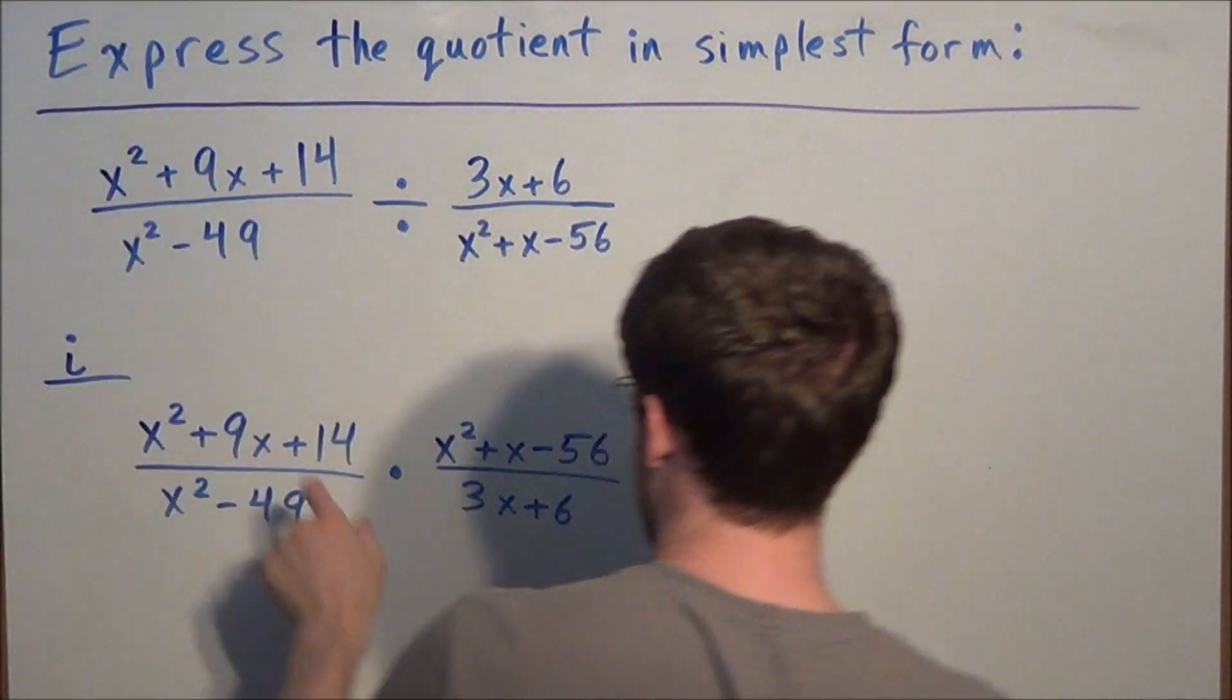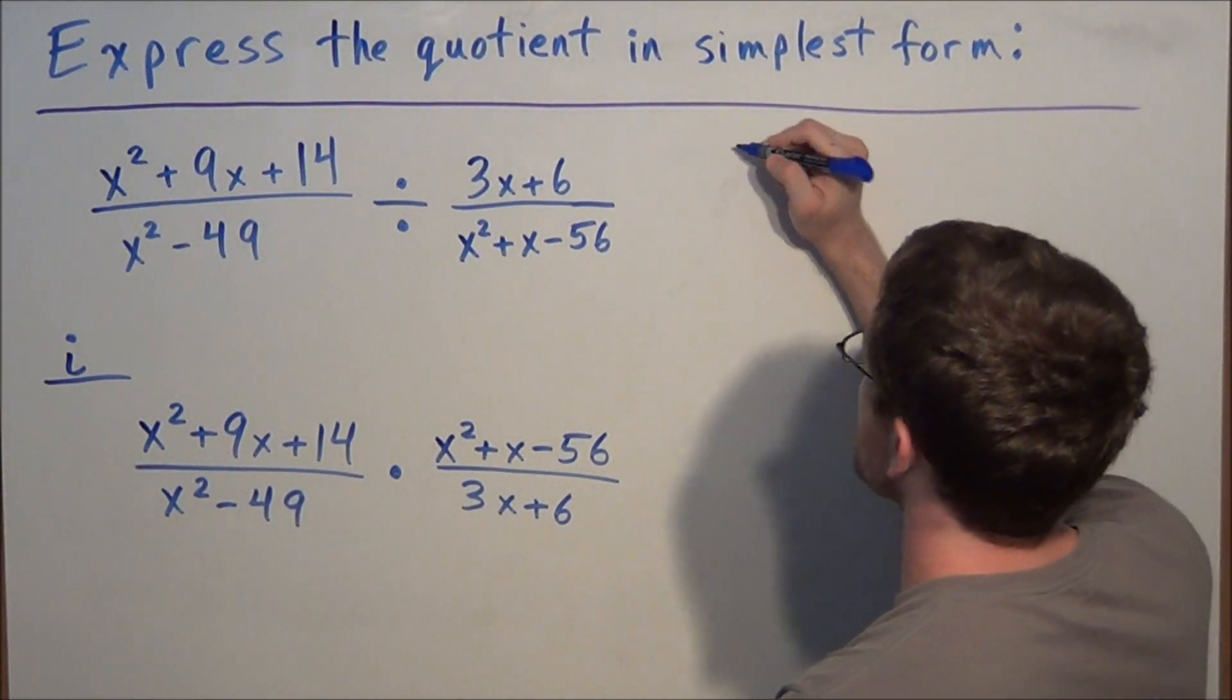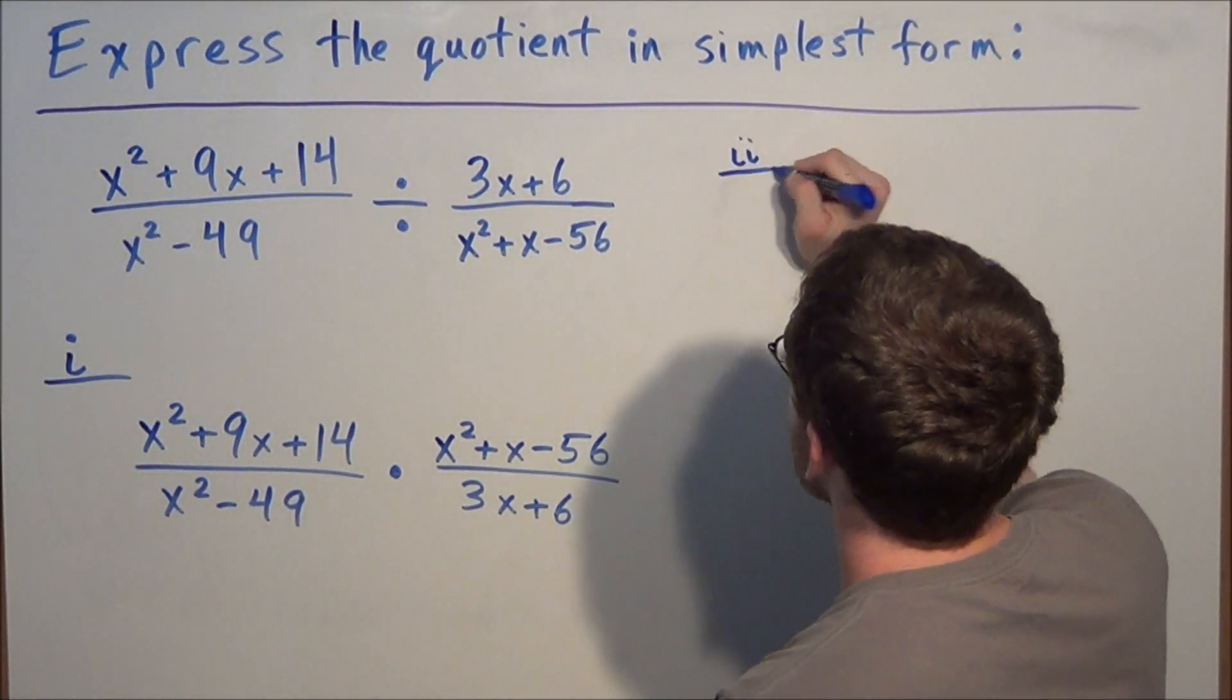What we're going to do is factor each piece of each fraction so we can start with the numerator of the first fraction. We'll call this step 2.